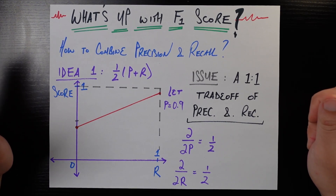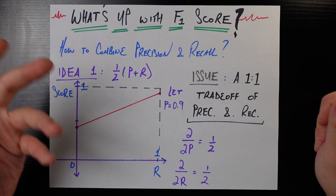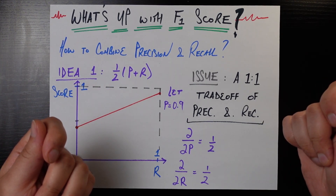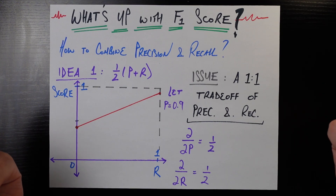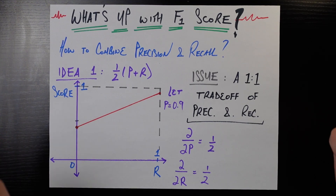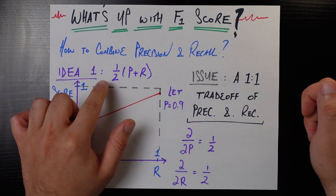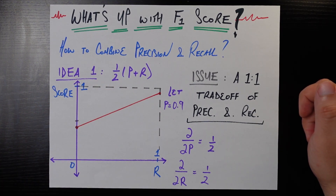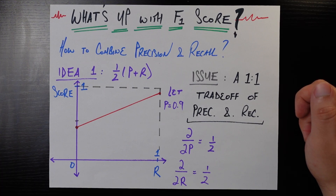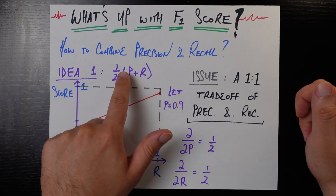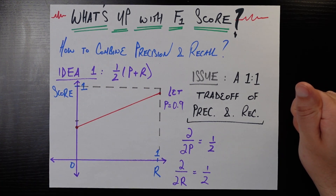Let's say somebody came up to you and said: I need some metric that combines precision and recall together — what would we come up with? I probably would not come up with F1 score off the bat. I would say something very simple: just take the arithmetic average of precision and recall, one half of their sum. Let's take a look at what happens as we vary the recall in this formula, setting precision to a constant 0.9. We plug that in and now it's a formula of just one variable, recall.